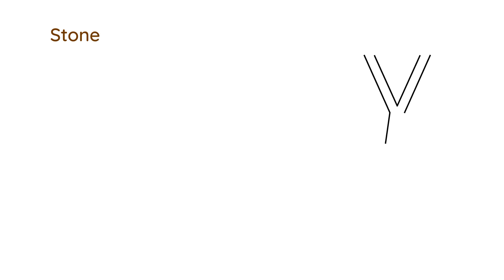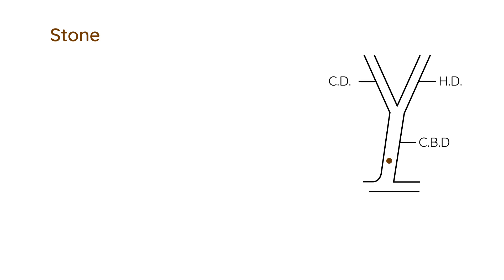What's happening here is you have a stone in the common bile duct. Remember, this was the cystic duct, this was the hepatic duct, and then you have the common bile duct with the stone sitting inside it. Normally that stone would just pass into the duodenum and not cause any problems — but sometimes it stays there.